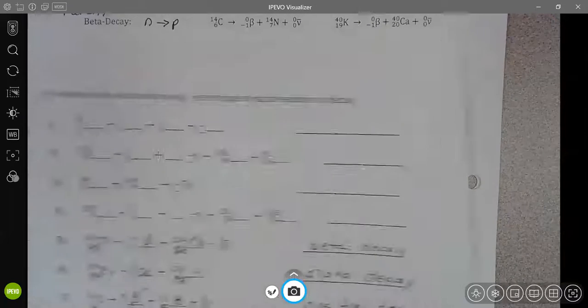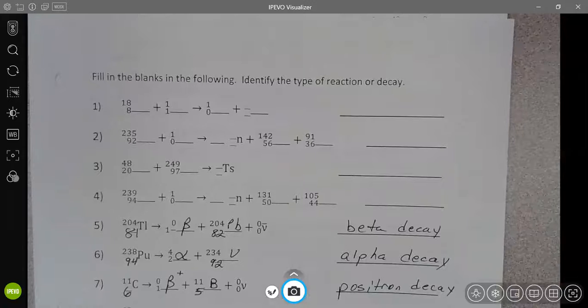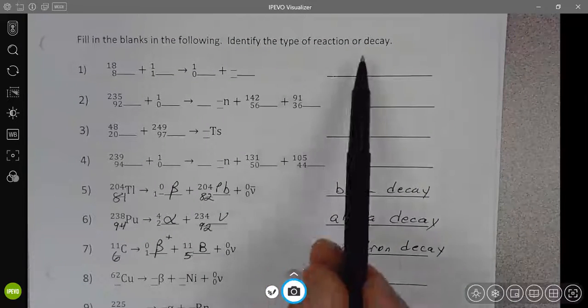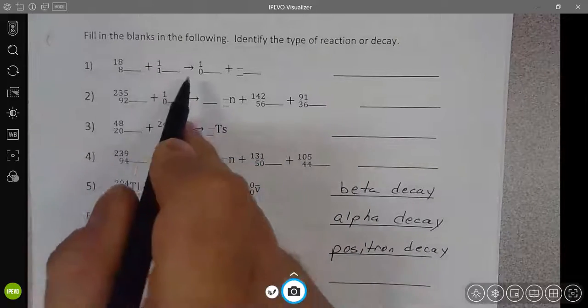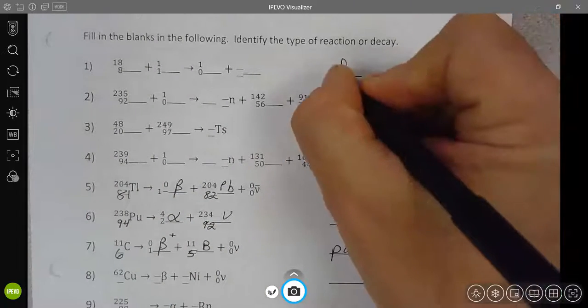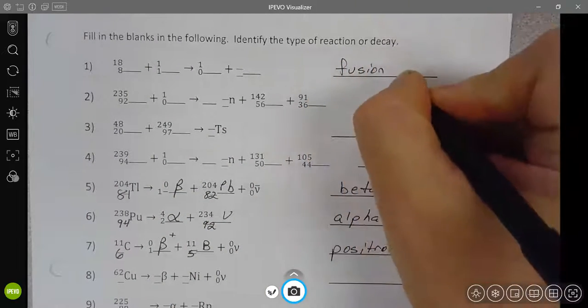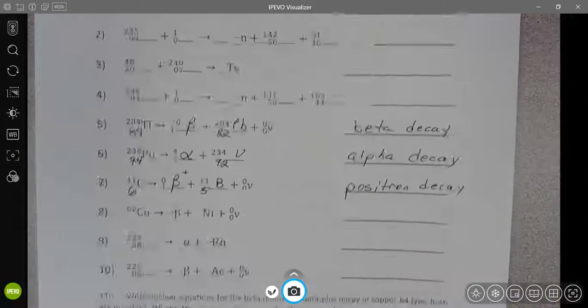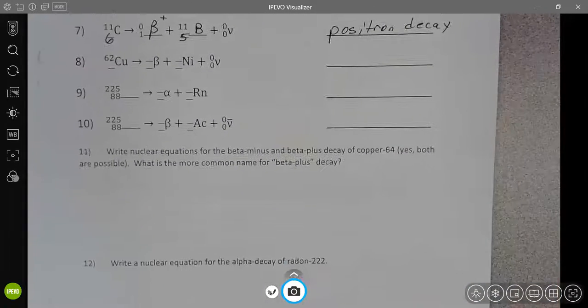So you want to take a look at these reactions. You want to fill in the missing pieces in the blanks. You want to identify the type of reaction or decay. If it is a fusion reaction, then you should be saying it is a fusion reaction.